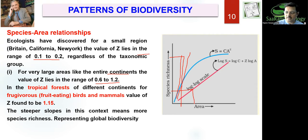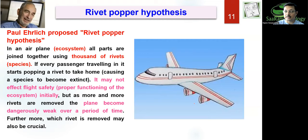For frugivorous birds and mammals in tropical forests, the Z value is 1.15. The steeper the slope, the more is the species richness. This is a very important concept from the exam perspective.